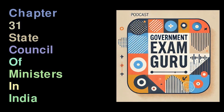Article 164 explains how ministers are appointed. The governor chooses the Chief Minister, and other ministers are appointed based on the Chief Minister's recommendations. Special provisions exist in states such as Chhattisgarh, Jharkhand, Madhya Pradesh, and Odisha, which require a specific minister to focus on tribal welfare and other community issues. Notably, Bihar does not follow this rule due to an amendment made in 2006. The total number of ministers, including the Chief Minister, cannot exceed 15% of the total number of members in the state assembly. However, a state must have at least 12 ministers. This regulation was established by the 91st Amendment Act of 2003.